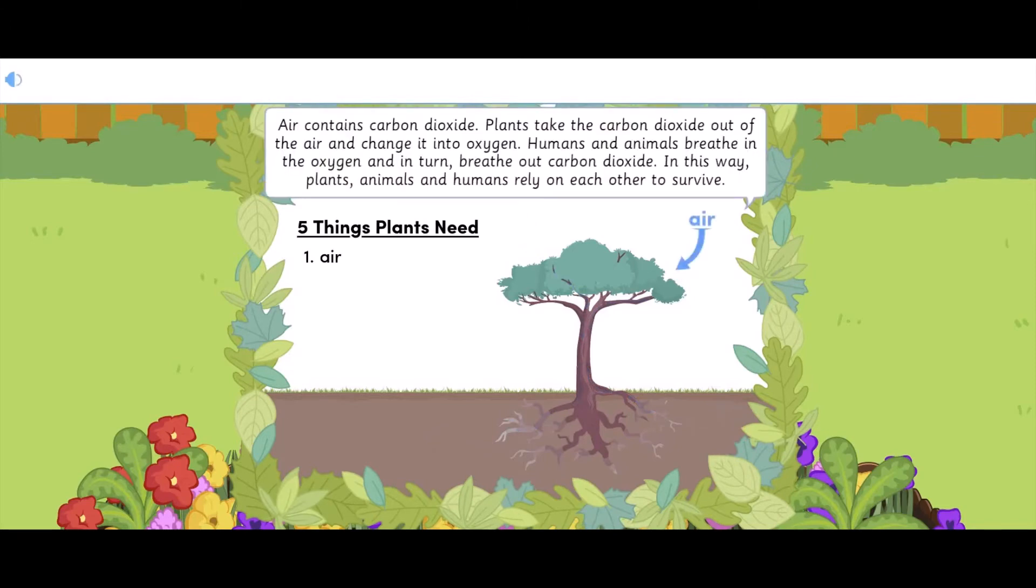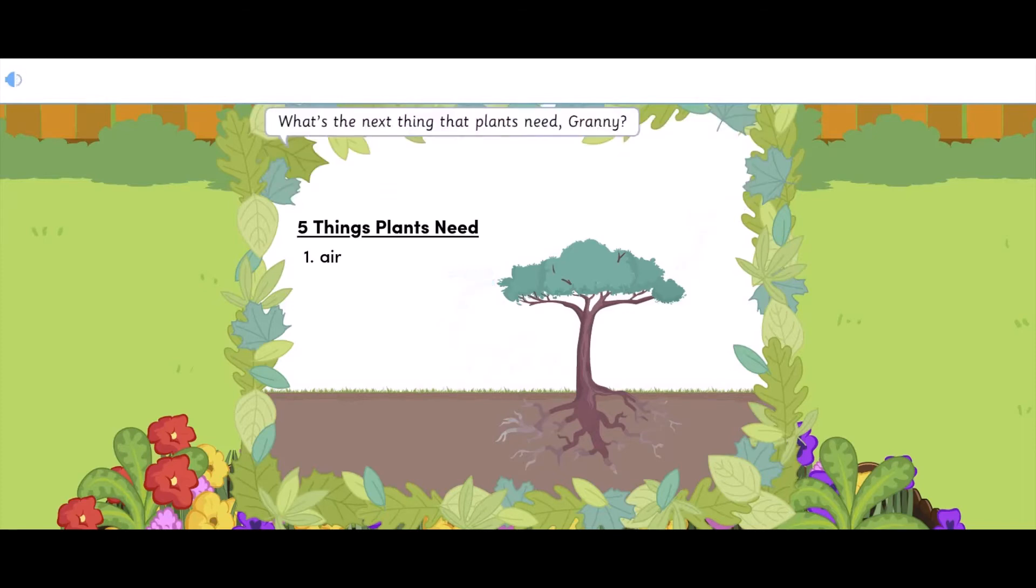Air contains carbon dioxide. Plants take the carbon dioxide out of the air and change it into oxygen. Humans and animals breathe in the oxygen and in turn breathe out carbon dioxide. In this way, plants, animals and humans rely on each other to survive. What's the next thing that plants need, Granny?